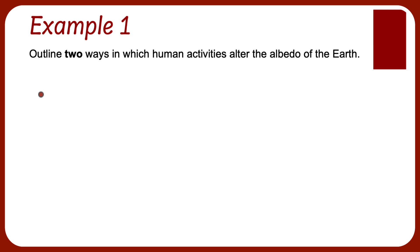Let's do a few examples of emissivity and albedo. First of all, outline two ways in which human activities can alter the albedo of the earth. The first one that comes to mind is the melting ice. We do have climate change due to human activities, with greenhouse gases increasing the average temperature of the earth, causing more of the ice to melt.